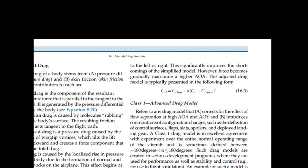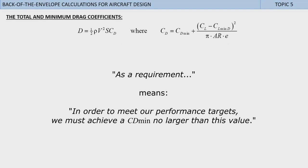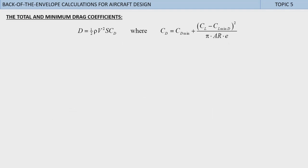Topic 5: The total and minimum drag coefficients. This topic further involves the drag equation. Using the adjusted drag model presented in section 16.2.1 in my book, we can write CD equals CDmin plus (CL minus CLminD) squared divided by π times aspect ratio times e. Where CDmin is the minimum value of the total drag coefficient, CLminD is the lift coefficient at which it occurs, and e is the Oswald's efficiency factor. This allows us to solve for the minimum drag coefficient CDmin. We can thus estimate this important parameter for both existing aircraft and as a requirement for our own design. The phrase 'as a requirement' means, in order to meet our performance targets, we must achieve a CDmin no larger than this value.